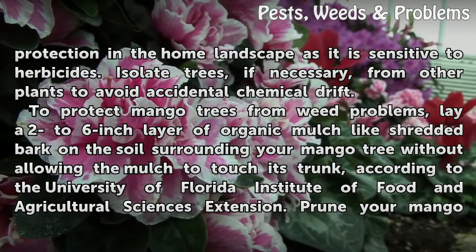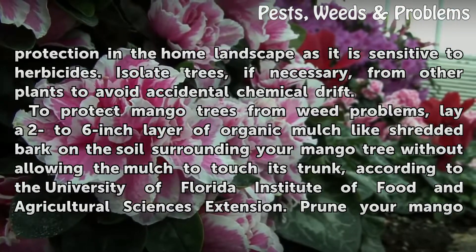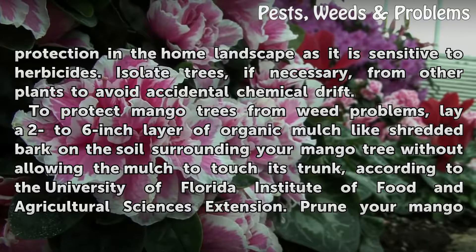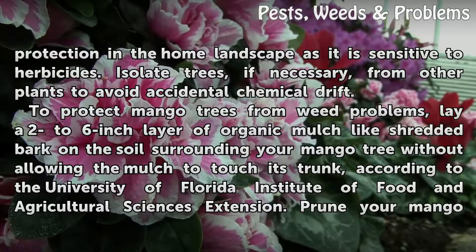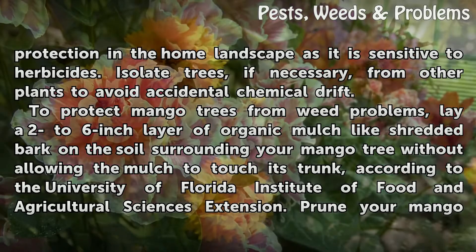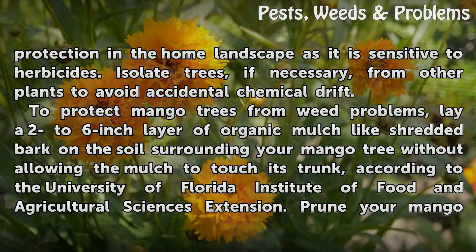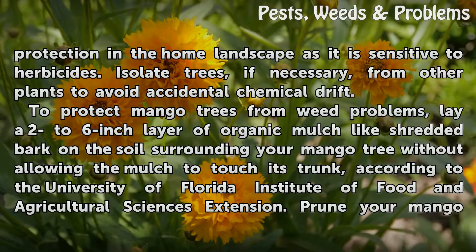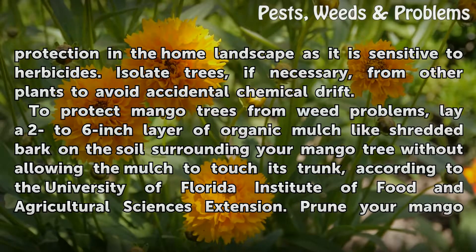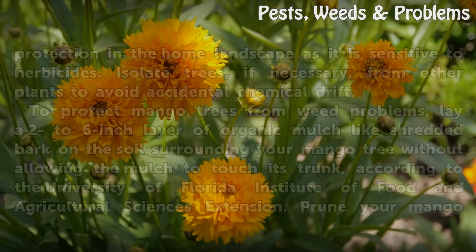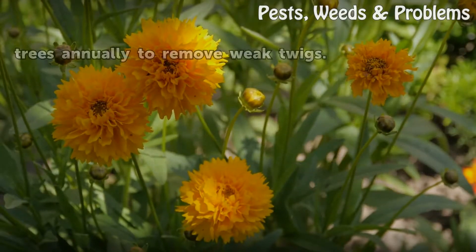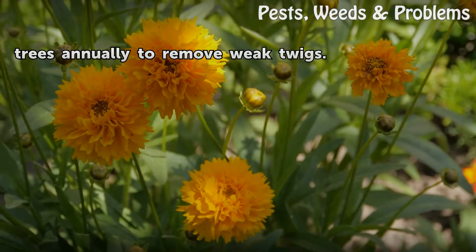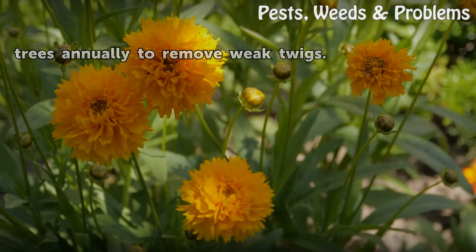This tree needs extra protection in the home landscape as it is sensitive to herbicides. Isolate trees if necessary from other plants to avoid accidental chemical drift. To protect mango trees from weed problems, lay a two to six inch layer of organic mulch like shredded bark on the soil surrounding your mango tree without allowing the mulch to touch its trunk, according to the University of Florida IFAS Extension. Prune your mango trees annually to remove weak twigs.